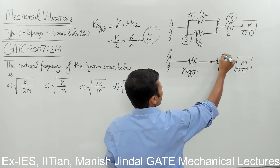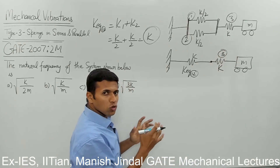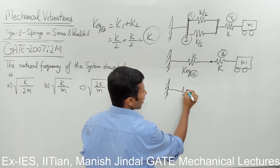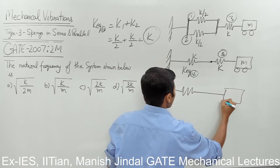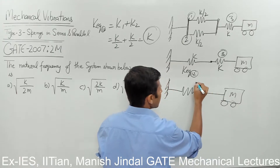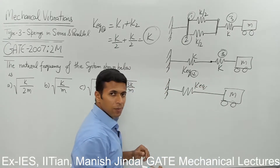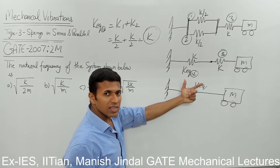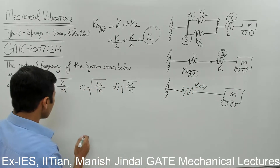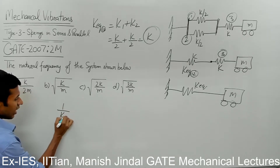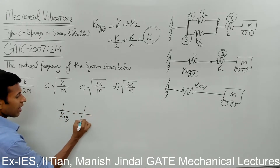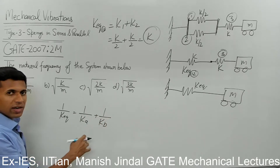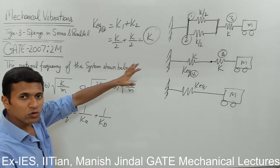So on one side is the wall, and on the other side is spring number 3. Now we will replace these two springs with a single equivalent spring. These two are now in series. The formula for stiffness in series is: 1 by k-equivalent equals 1 by k-a plus 1 by k-b.